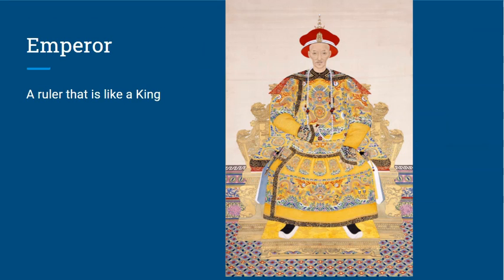Our first vocab word is emperor. An emperor is a ruler that is like a king. You've looked at rulers like pharaohs in ancient Egypt and kings in Mesopotamia like Hammurabi — both had laws and ruled a large tract of land. In ancient China, those leaders are called emperors, and they rule over an empire.